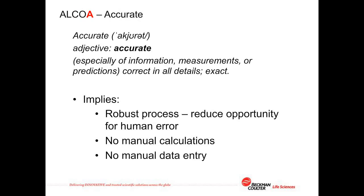Finally, the A in ALCOA: the records should be accurate. This implies that the process of capturing those electronic records should be robust — manual calculations, manual data entry where opportunities for human error exist should be avoided.